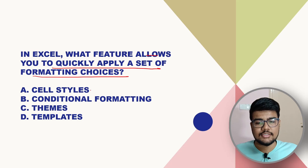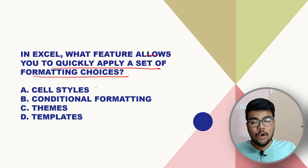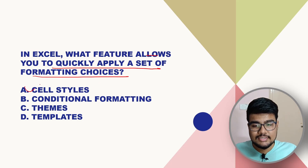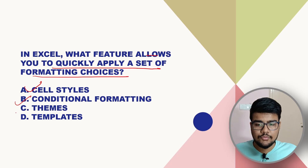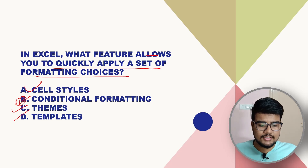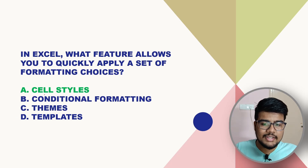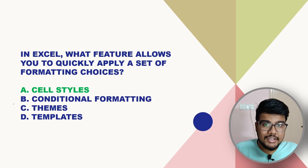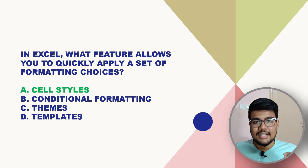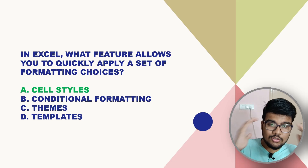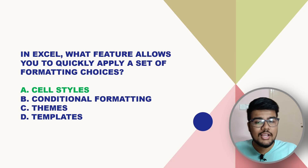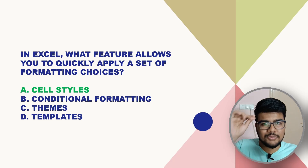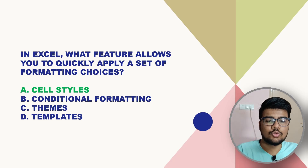What feature in Excel allows you to quickly apply a set of formatting choices? The options are Cell Styles, Conditional Formatting, Themes, and Template. The answer is Cell Styles — not every prediction will work, but keep this in mind: Cell Styles is used to quickly apply a set of formatting choices.